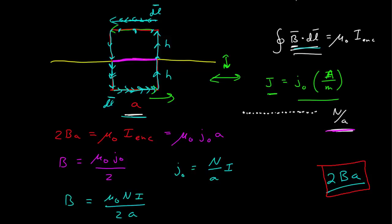For the vector form, above the sheet the field is in the negative x direction, and below it is in the positive x direction. Analyzing the result: the field is proportional to the current density, which makes sense — more current gives a larger field. Notably, the field does not depend on the height above the sheet, meaning it is constant for all distances.